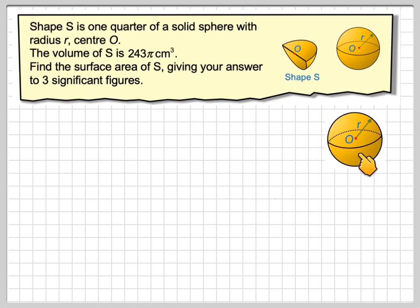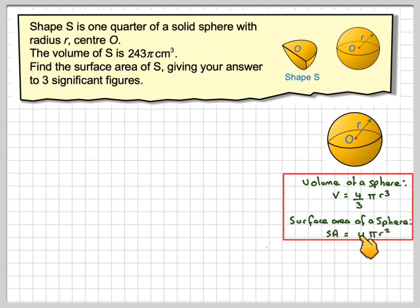So before we start, here we have a sphere. These formulas in IGCSE are normally given to you. The volume of a sphere, V, is equal to 4/3πr³, but it's always worth learning. And the surface area of a sphere is equal to 4πr². But like I said, they're written on the exam paper for you.